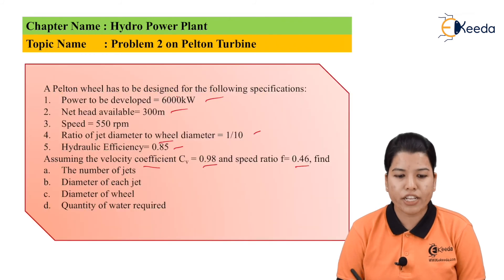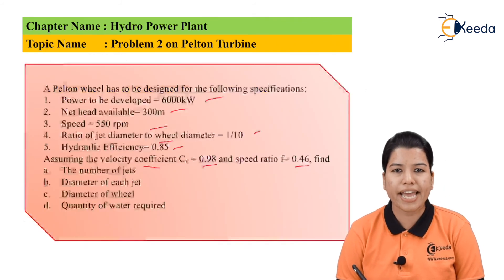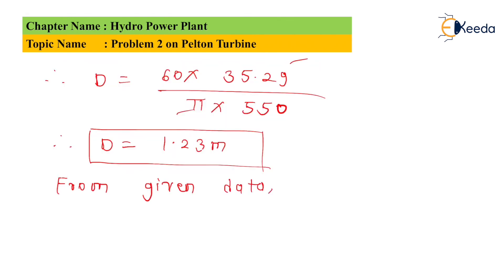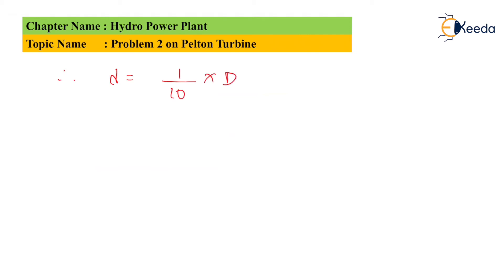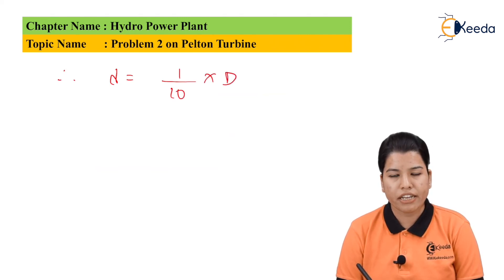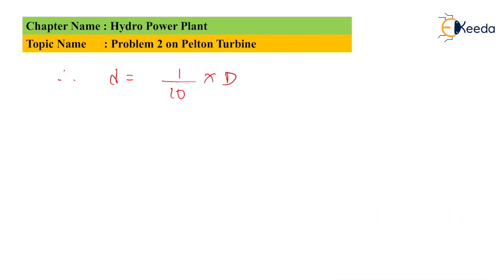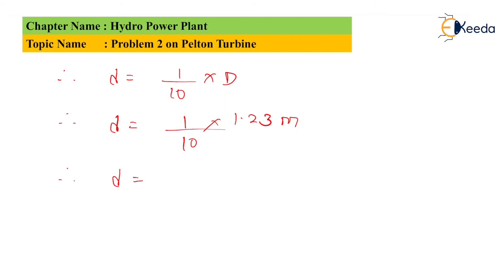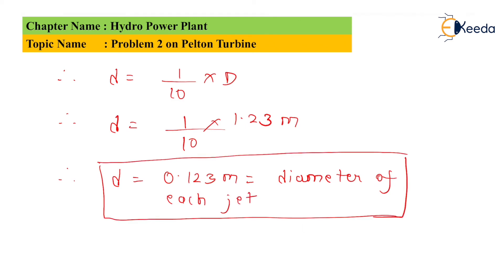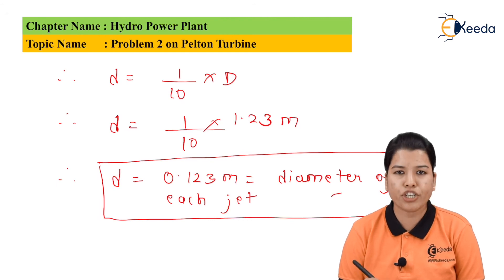In the problem it is mentioned that the ratio of jet diameter to wheel diameter is 1 by 10. Hence we can write: small d divided by capital D equals 1 divided by 10. So small d equals 1 divided by 10 multiplied by capital D, where capital D is the diameter of the wheel. We have already calculated D, so substituting: small d equals 1 divided by 10 multiplied by 1.23. Therefore, small d equals 0.123 meter, which is the diameter of each jet.